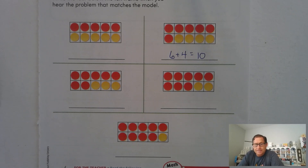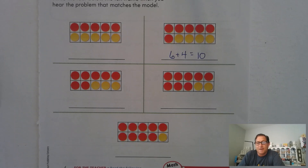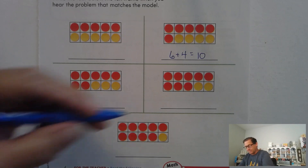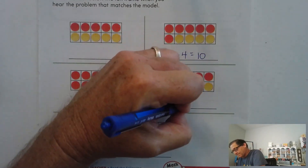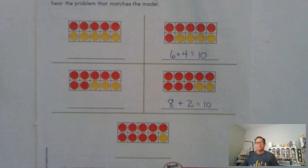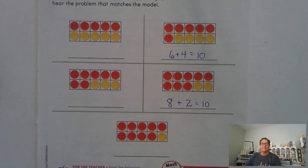There are eight large dogs and two small dogs. How many dogs are there? Go ahead and pause the video and write the math problem represented by that model. Eight large dogs and two small dogs — eight and two more is 10.